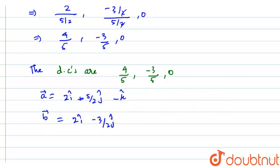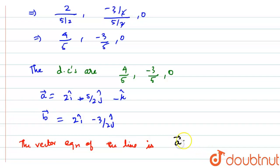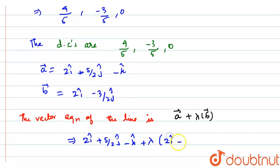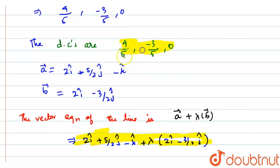The vector equation of the line is: using the formula a vector plus lambda into b vector, I will have: 2i cap plus 5 by 2 j cap minus k cap, plus lambda into 2i cap minus 3 by 2 j cap. This is our required vector equation. So we have found the required vector equation and also the direction cosines of the given line. Thank you, guys.